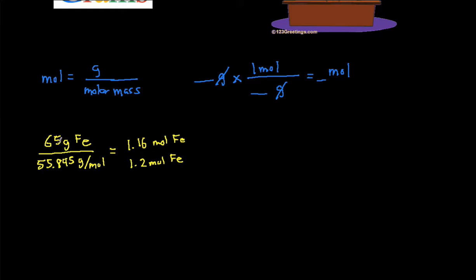So let's recap. All we did is take the grams and divide it by the molar mass. The other method using dimensional analysis, we're going to have 65 grams of iron. Then I'm going to multiply it by one mole on top.